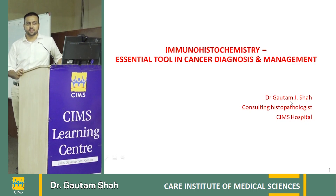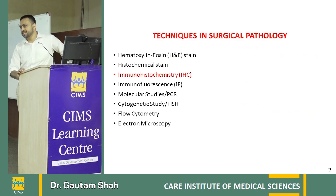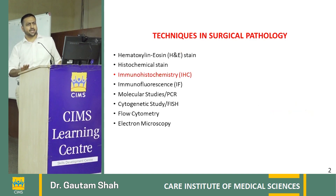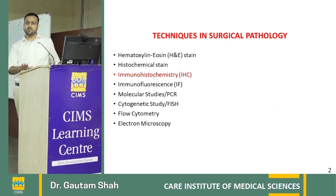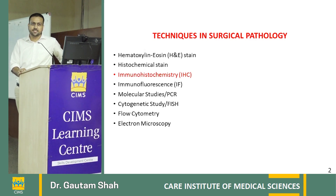Thank you for giving me this opportunity to speak about immunohistochemistry, a very essential tool in the new era of cancer diagnosis and management. Coming to surgical pathology techniques, the first two methods — hematoxylin stain and histochemical stain — have been in use since ages and are the gold standard for surgical pathology diagnosis. They cover benign, infective, and inflammatory etiologies, finishing 70 to 80 percent of work. But when it comes to cancer diagnosis, we need ancillary studies, and immunohistochemistry is the most important among them.